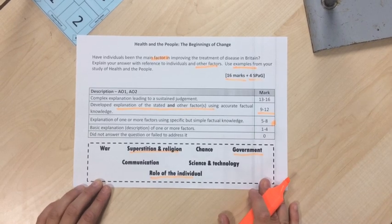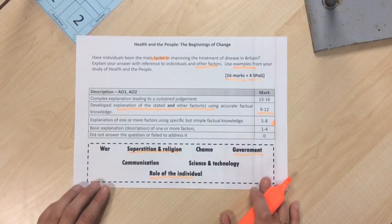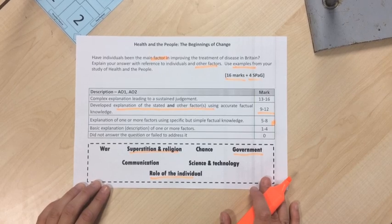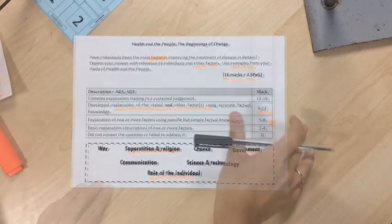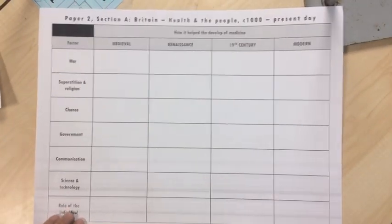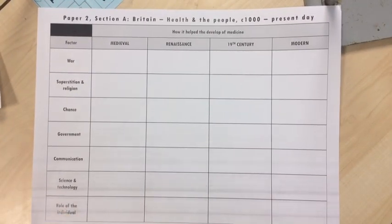You need to be able to include two examples from two different time periods in each paragraph. I'm going to make a rough plan looking at three different factors using an overview sheet which hopefully your teacher has provided to you.